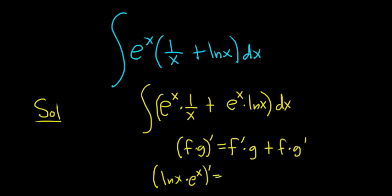So taking the derivative: the derivative of the first is 1/x times e^x plus the first, which is ln x, times the derivative of e^x, which is just e^x.